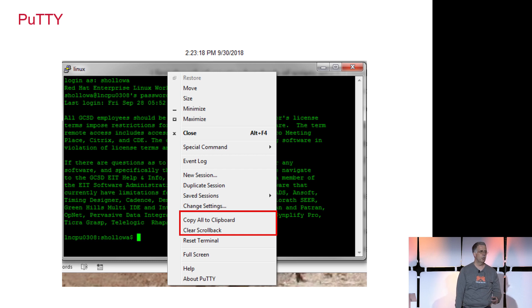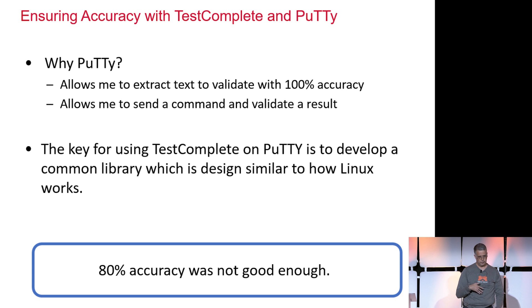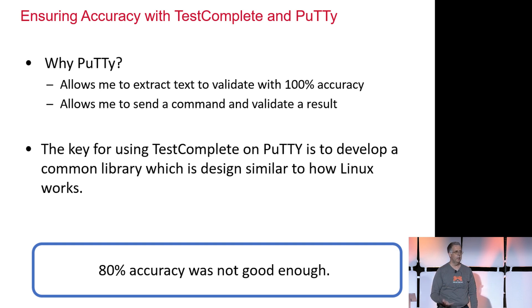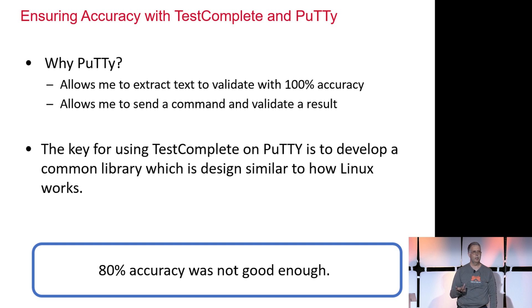One of the nice things PuTTY gives you is it's able to copy all the contents displayed in the terminal into the clipboard, and you can also clear the scroll back. Using that feature, instead of doing an OCR on the screen, we're able to capture all the data from PuTTY, put it into an array, and manipulate the results. The key part is it's 100% accurate — you're getting the ASCII information back, not relying on OCR.